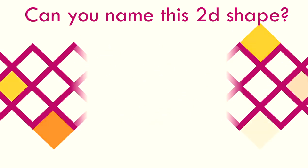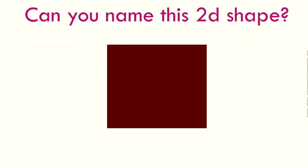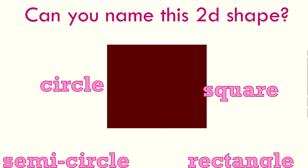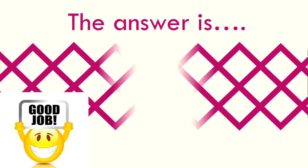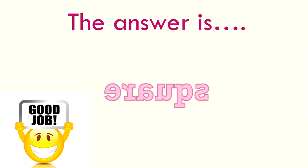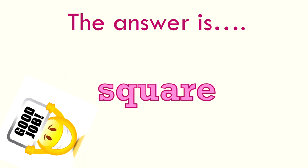Can you name this 2D shape? Is it a circle? A semicircle? A square? Or a rectangle? A triangle? The answer is square. Fantastic. Well done.